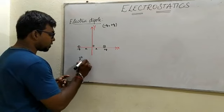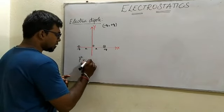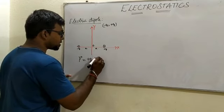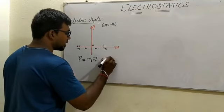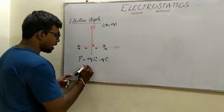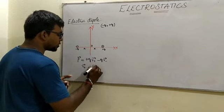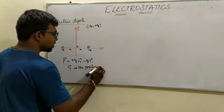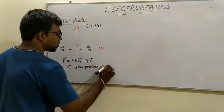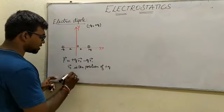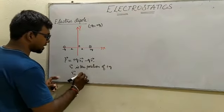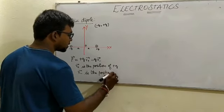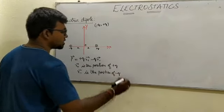The electric dipole moment is defined as p-vector equals plus q times r-vector (position of the positive charge from the origin) minus q times r-vector (position of the negative charge from the origin).